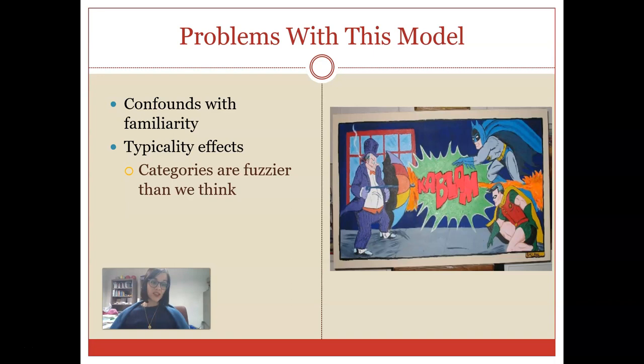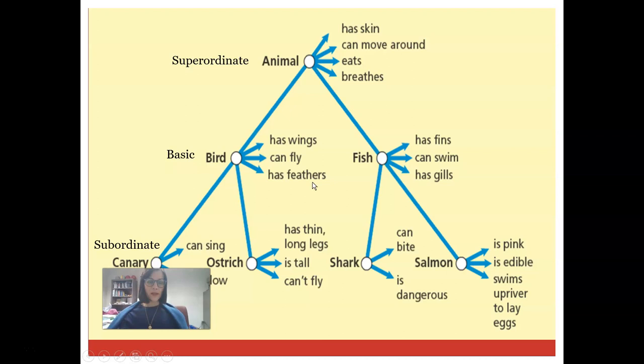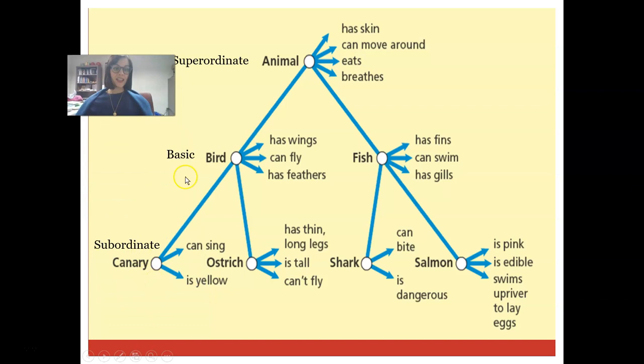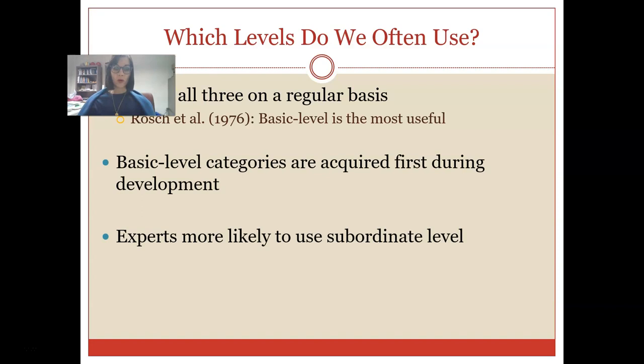Here is a major problem with this model. One of the things that we do find is that the hierarchical model does tend to be a bit confounded with familiarity. Verification times tend to be faster for things that we are more familiar with and that can be really hard to tease apart. Here's another example. Going back to this model, the time that it takes to verify that a canary is a bird should match the verification time that an ostrich is a bird. They are both one level below and according to this model, they should take the exact same time because they're on the subordinate level and we need to go up to the basic level. I hope you're kind of recognizing that that's probably not the case.